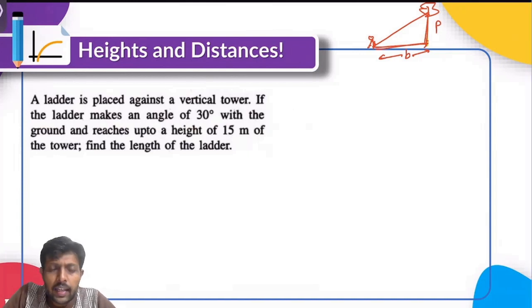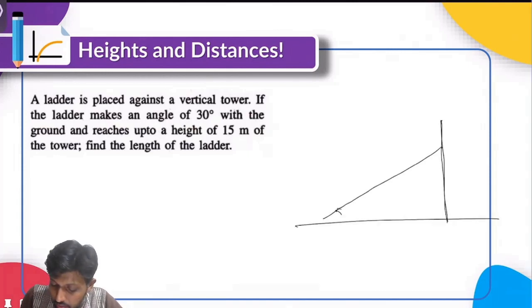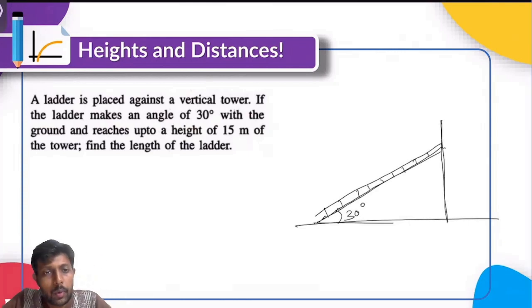So a ladder is placed against a vertical tower. So we'll go step by step. So there is a vertical tower and there is a ladder placed against it. Let me draw a vertical tower first. So there is a vertical tower. This is our tower. And there is a ladder. It makes an angle of 30 degrees. So here is the ladder. It makes an angle of 30 degrees with the ground. This is your ladder which makes an angle of 30 degrees with the ground and reaches up to a height of 15 meters of the tower. So this height is 15 meters. What you have to do is find the length of the ladder. How long is this? That's what you have to find out.